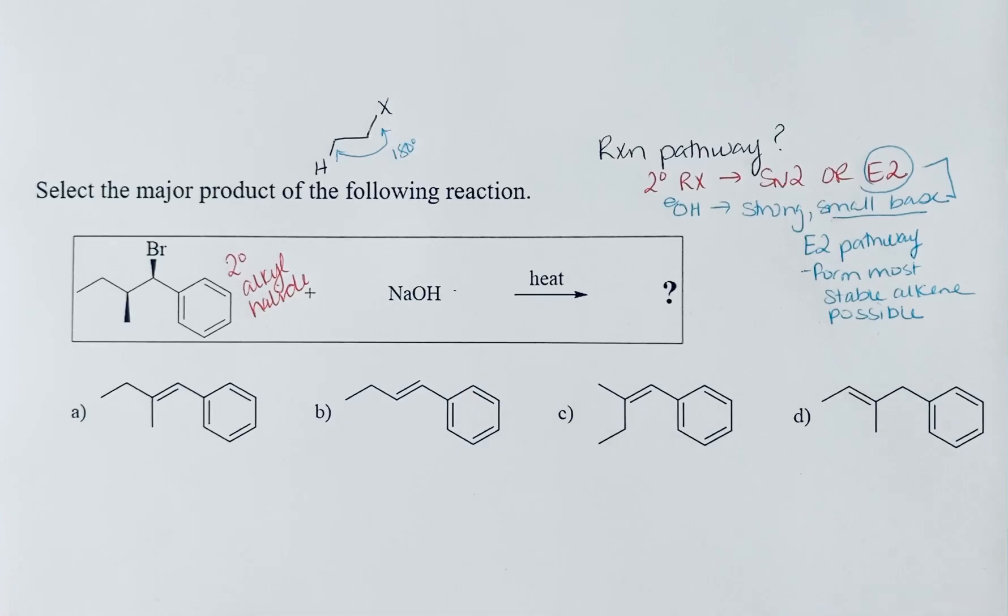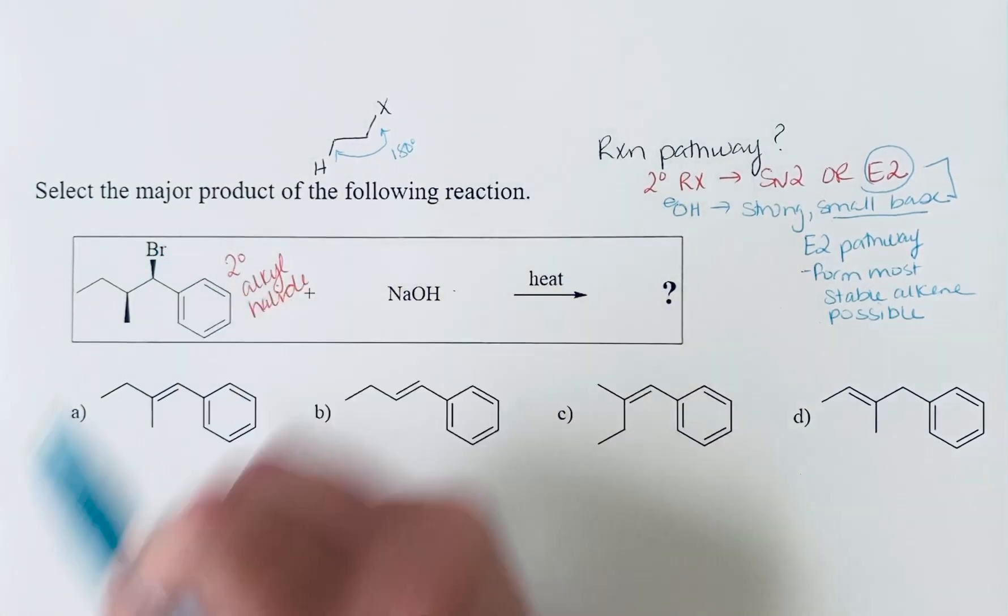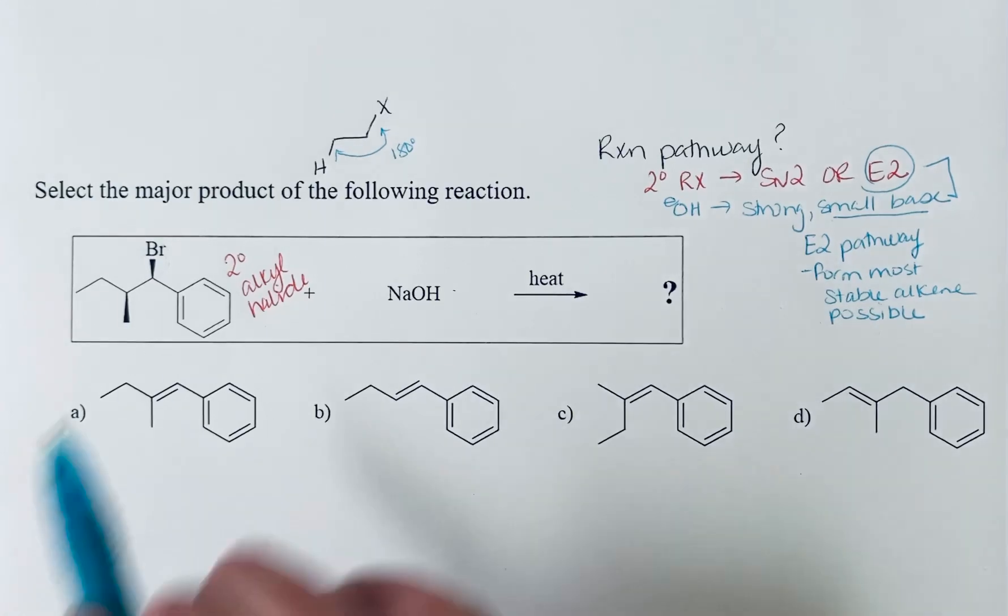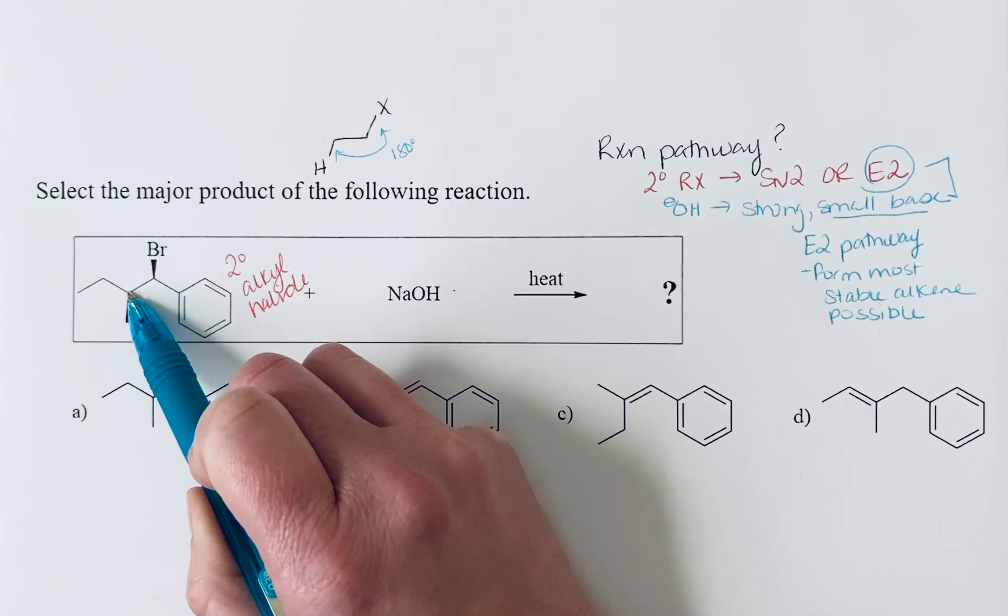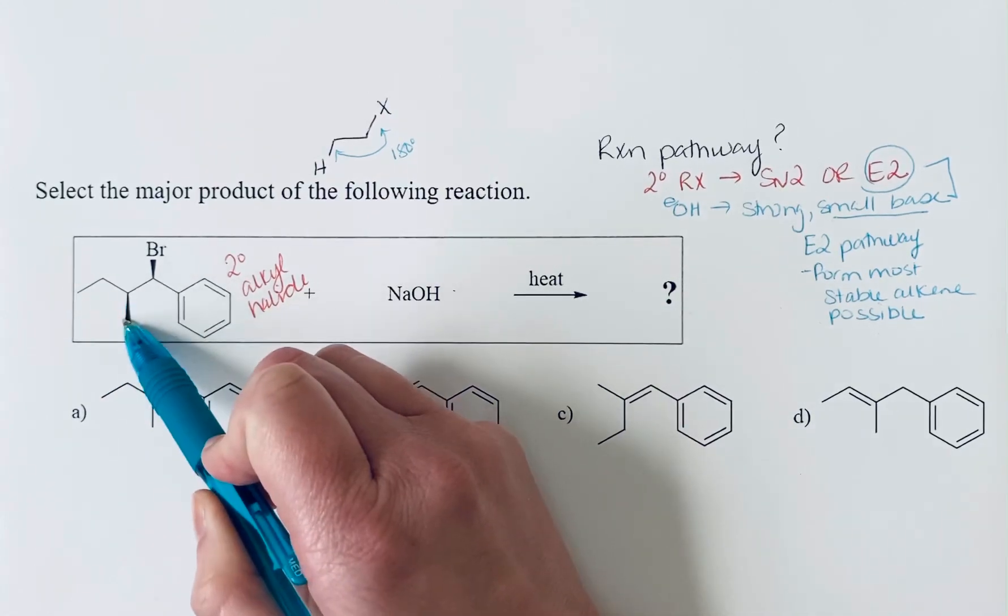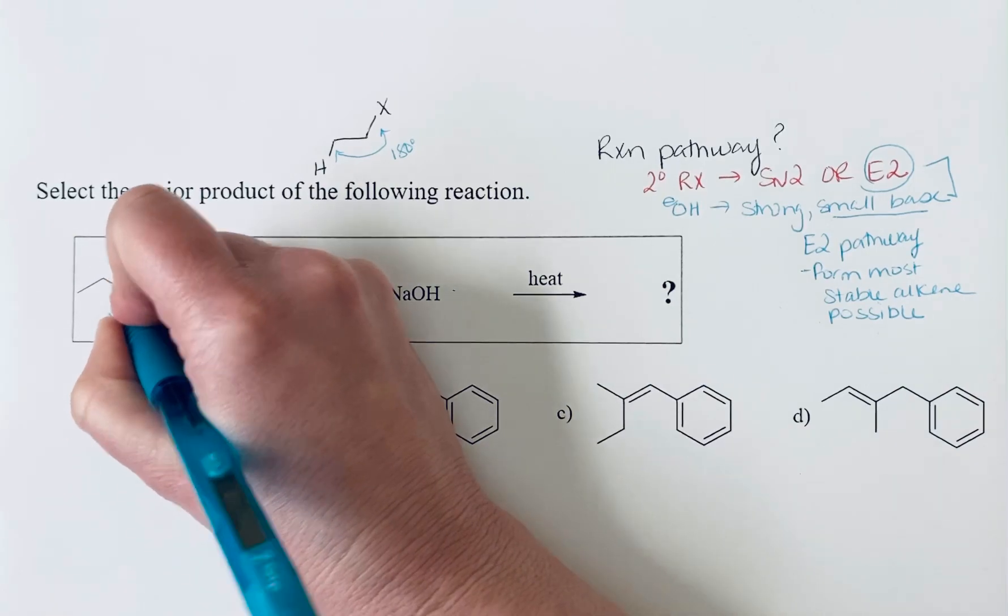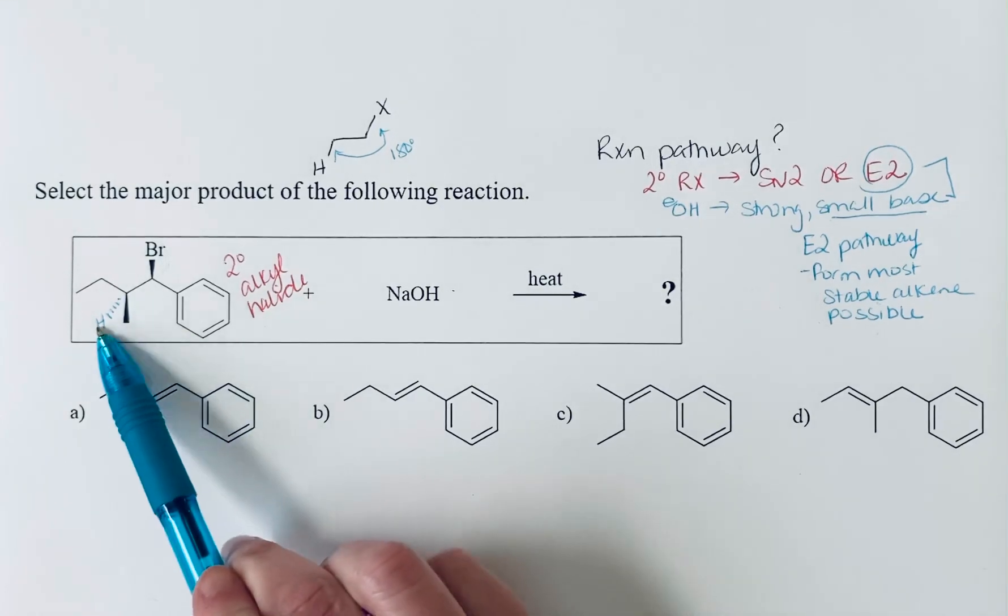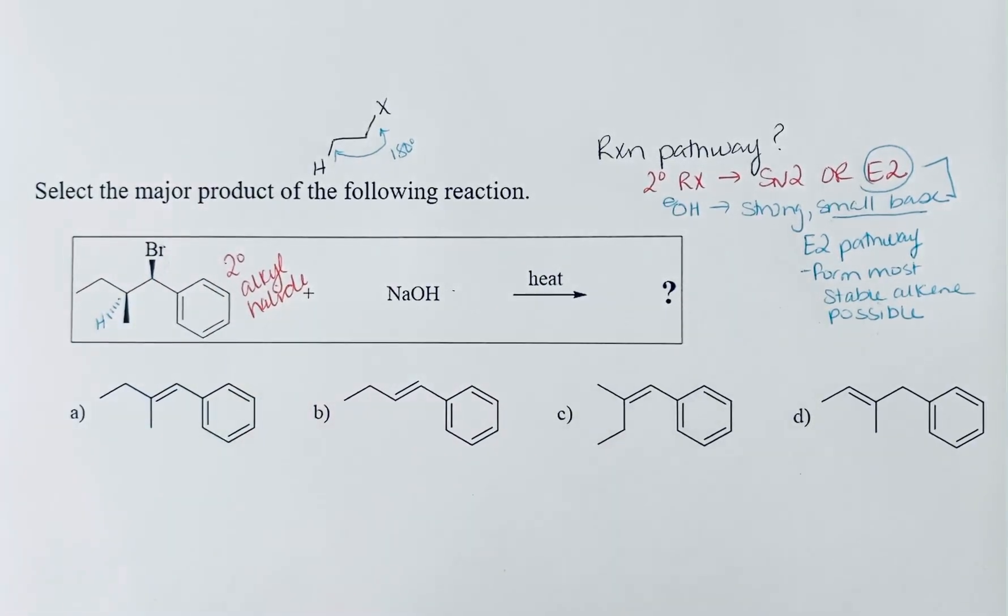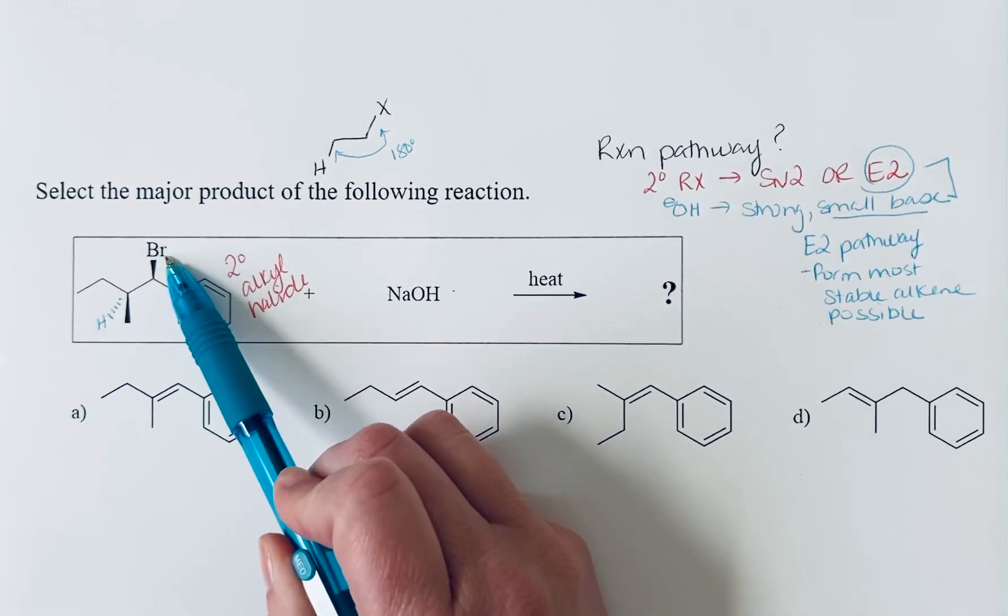And so that means we need a hydrogen that is 180 degrees away from this bromine. We've got a benzene ring on one side - there's no hydrogen there. The other carbon atom we've got an ethyl group. We see a methyl group sticking out of the plane, which tells us that we have a hydrogen atom going into the plane. We need to know: is this in an orientation that can undergo an E2 reaction? And it is - this hydrogen is 180 degrees away from this bromine.